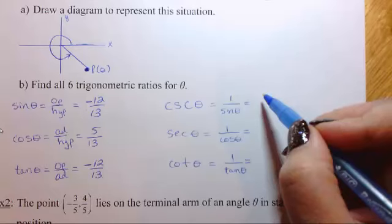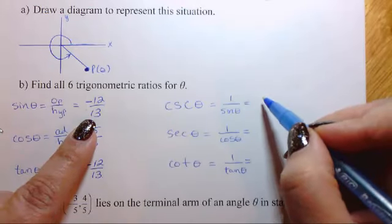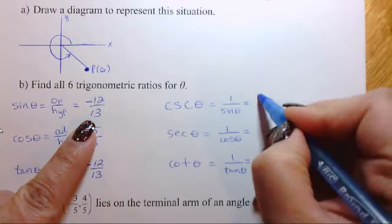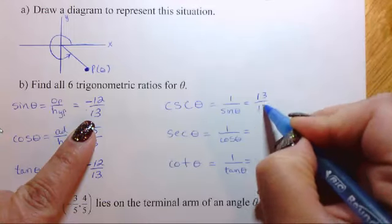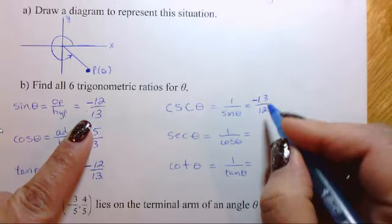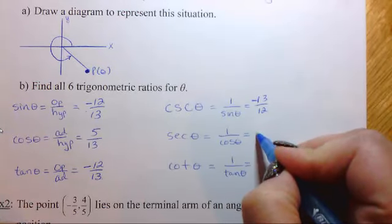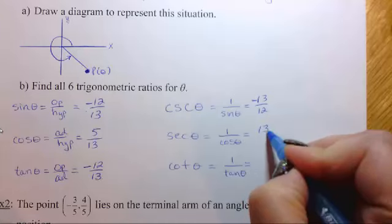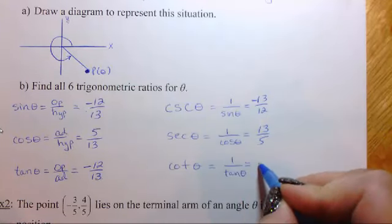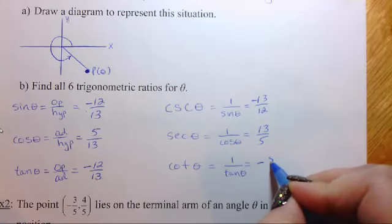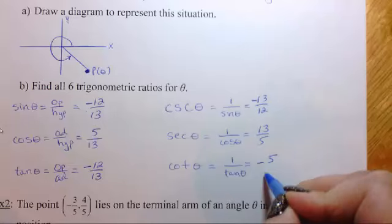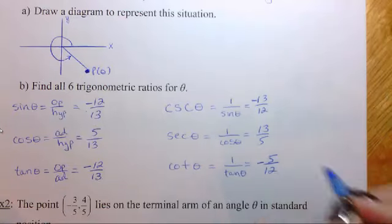And simply for the reciprocals, we're just going to take each one of these values and we're going to flip it over, just write the reciprocal. Okay, so cosecant is negative 13 over 12. Secant theta is 13 over 5. And cotangent is just going to be the reciprocal of tangent, which is negative 5 over 12. And I've made a mistake here.